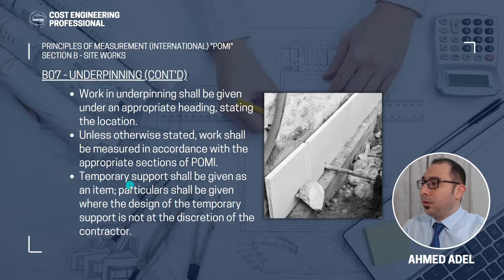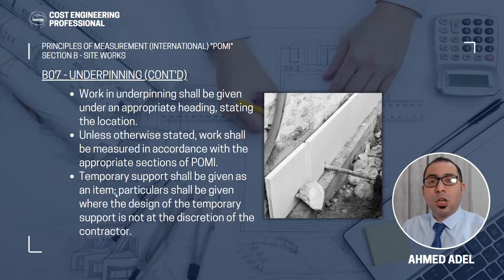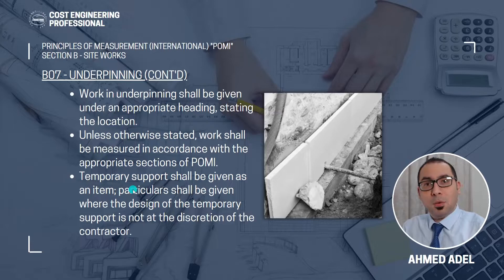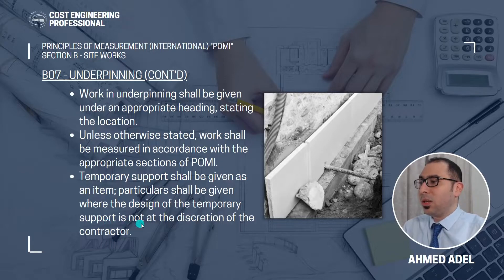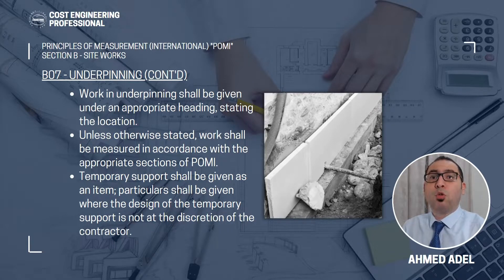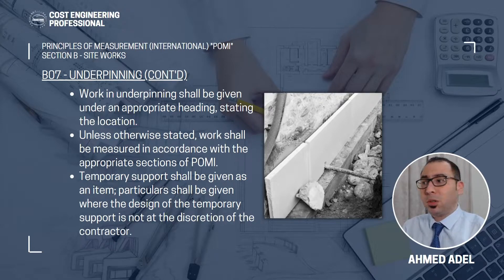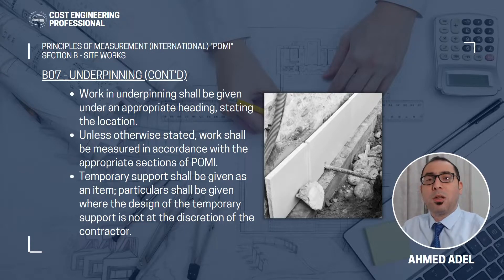Point number three: temporary support shall be given as an item. If you need to expose some foundation and require some temporary support, you have to give this in the BOQ as an item. Particulars shall be given where the design of the temporary support is not at the discretion of the contractor. If you require a specific type of support, you need to specify exactly what type of support is required for the underpinning works.